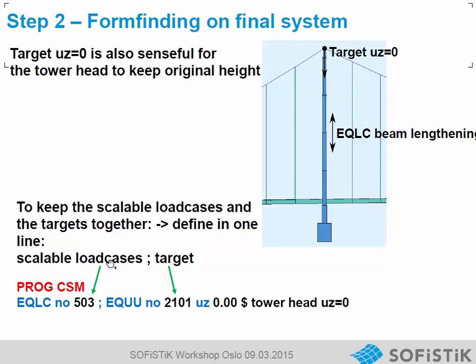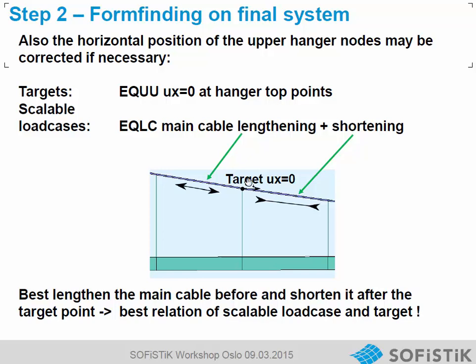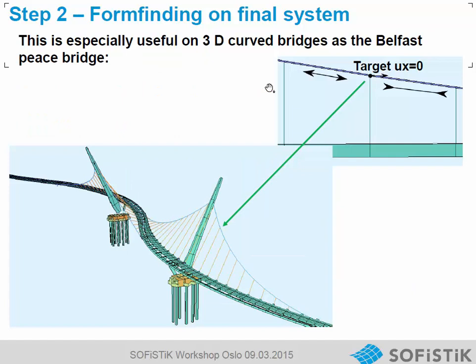We write everything in one line. The scalable load case is the lengthening and the target is Uset equals zero. When we have an optimization of the vertical nodes, sometimes the nodes also get a little horizontal deflection. We can adjust this by adding a target UX equals zero for this node. The scalable load case shall always be a pair of lengthening on the left and shortening on the right, so we only move this node horizontally and do not disturb the other effects.